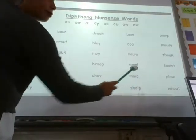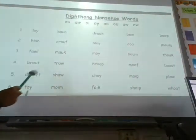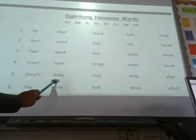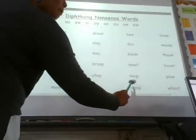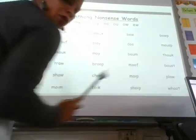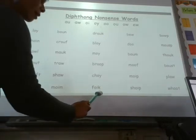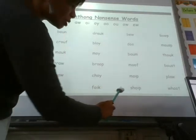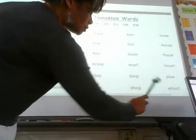Mof — or it could be mof. Baust. Drauft. Shaw. Choi. Moip. Plaw. One more row: foi, moim, foik — my mouth is making all these positions — shaw, and woot.